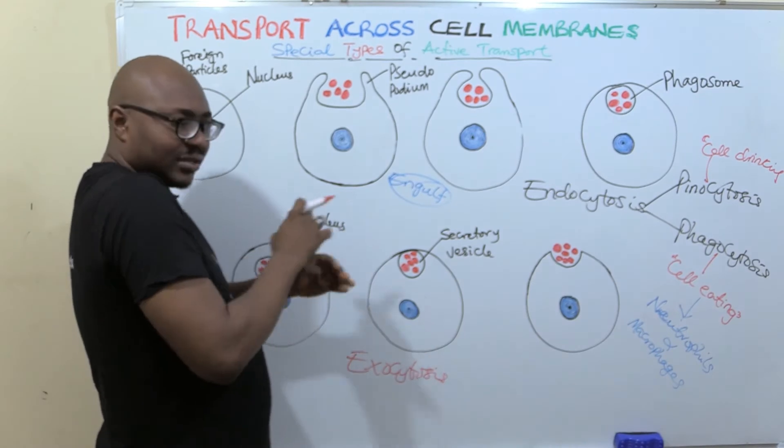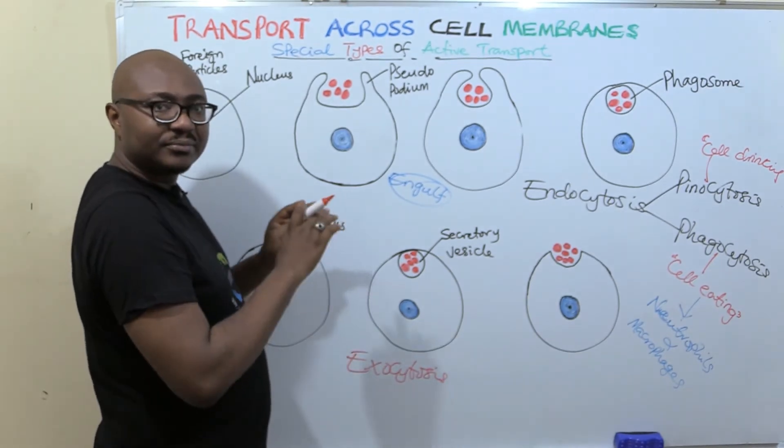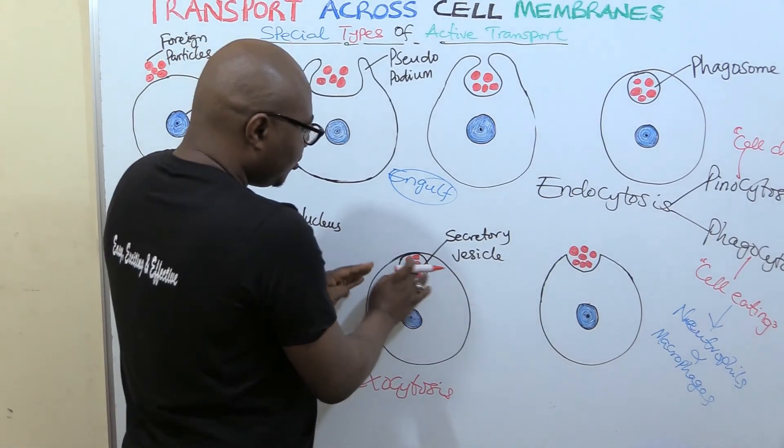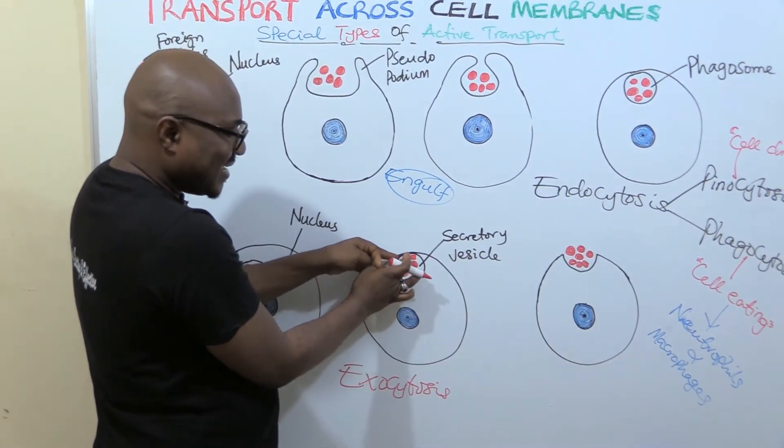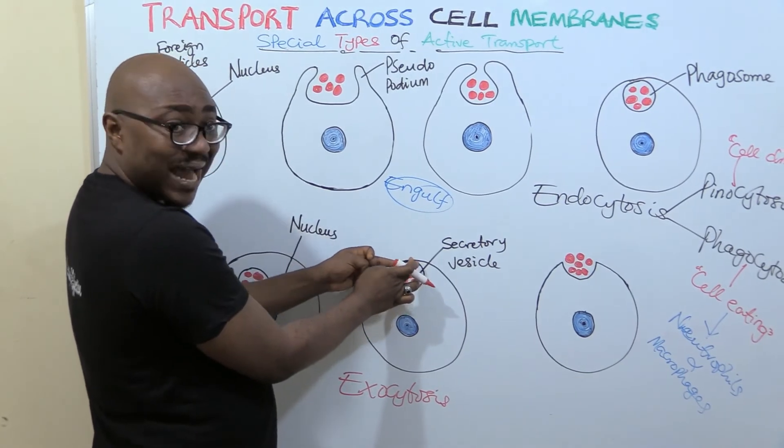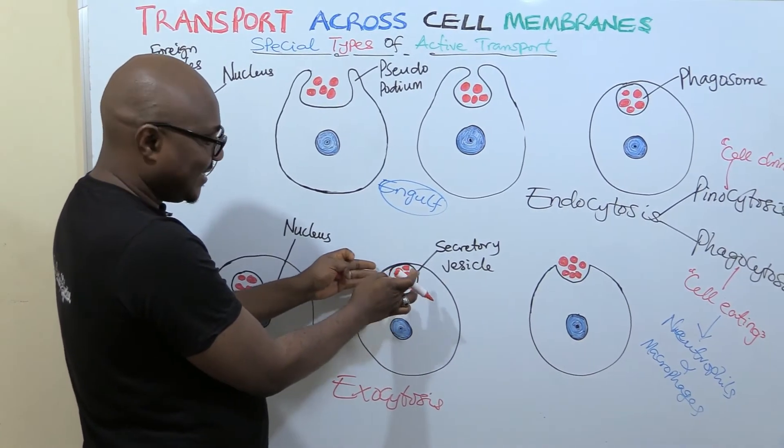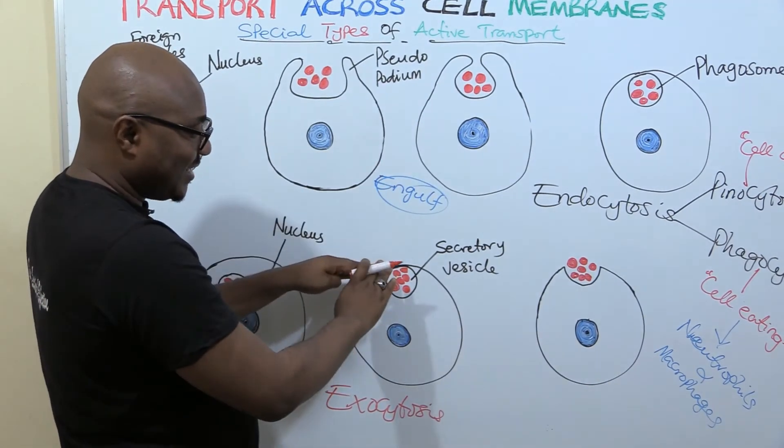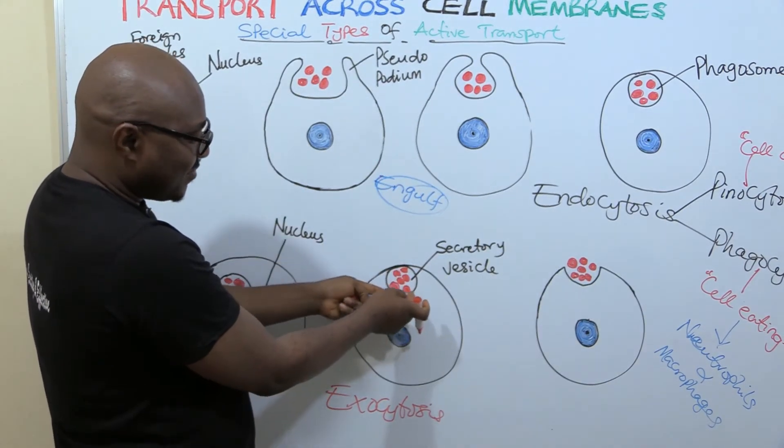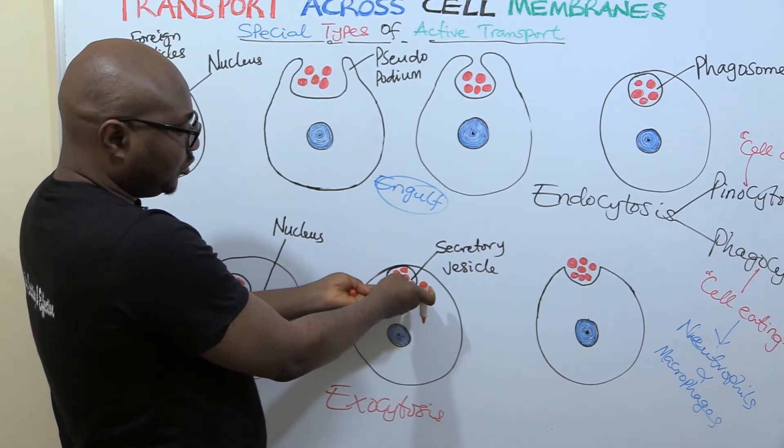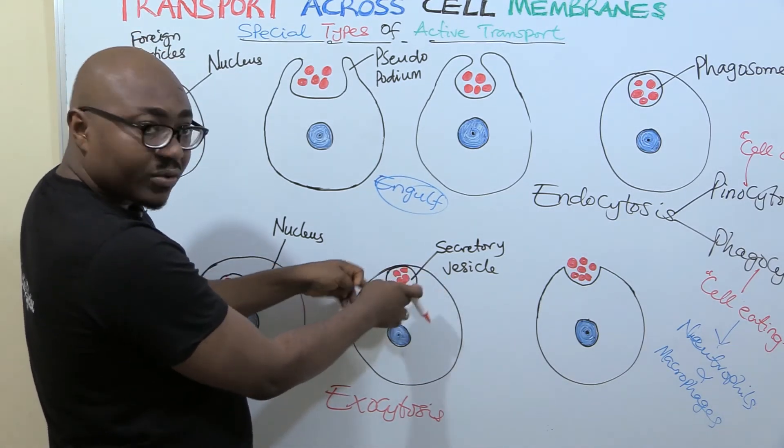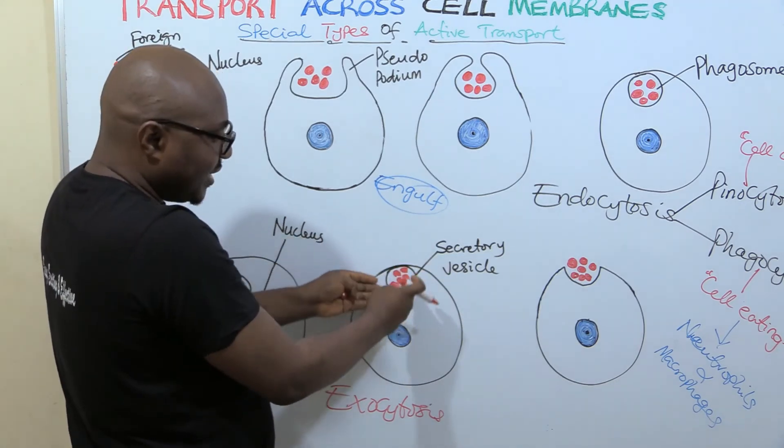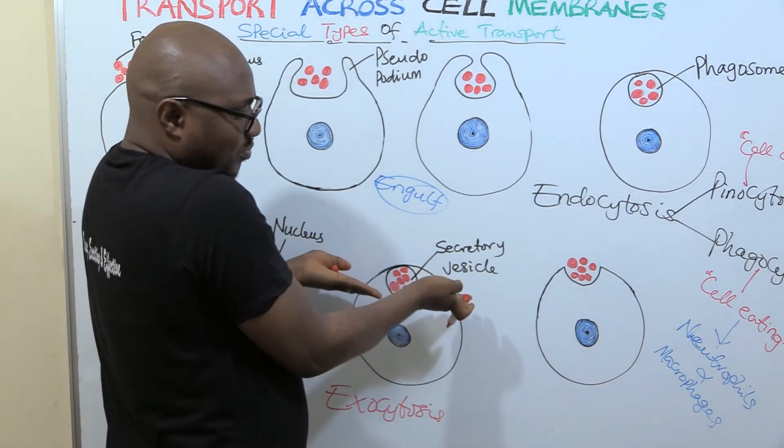So it's like the opposite. Now this is the secretory vesicle, bound by a membrane. They're inside. So it now moves to the cell membrane. And then the cell membrane breaks down here. In this other one it fuses, in this one it breaks down. So this cell membrane now joins, that's this membrane that is in the secretory vesicle. It's bound by a membrane. Now it joins with the cell membrane.